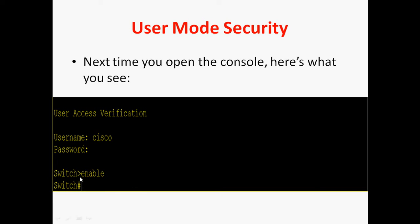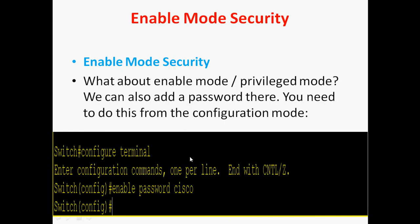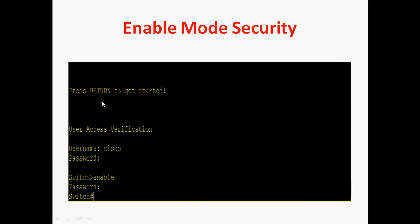Now we are going to secure enable mode, or privilege mode. Both terms refer to the same thing. We can also add a password for enable mode. You do this from global configuration mode. In global mode, 'enable' is a keyword and 'password' is also a keyword. Then give whatever password you want to set for enable mode — here I use 'cisco'. Next time, after entering username and password to reach user mode, you give the 'enable' command. It will ask for the enable password, and only after typing it correctly will it enter privilege mode.